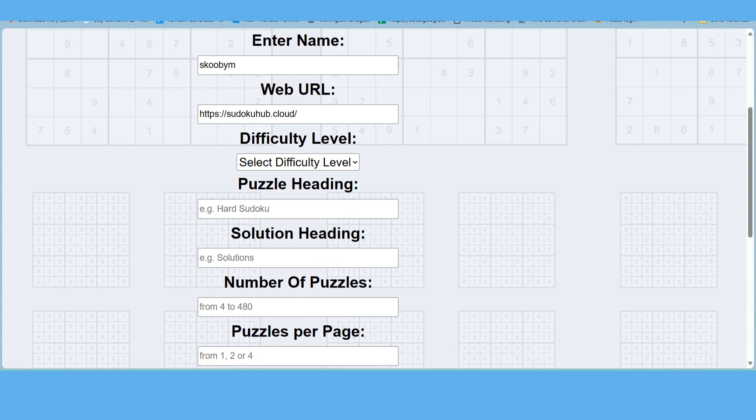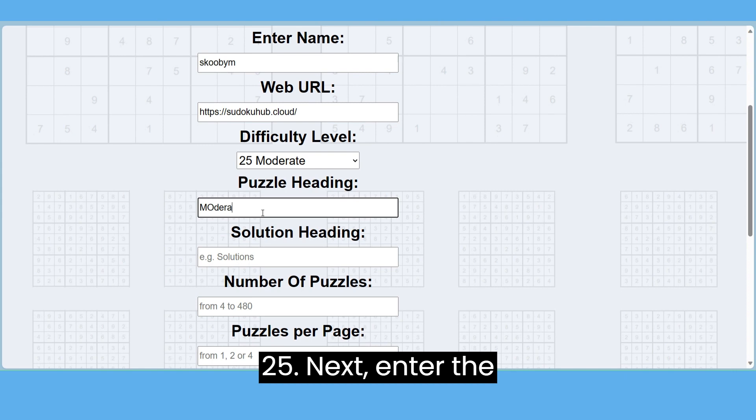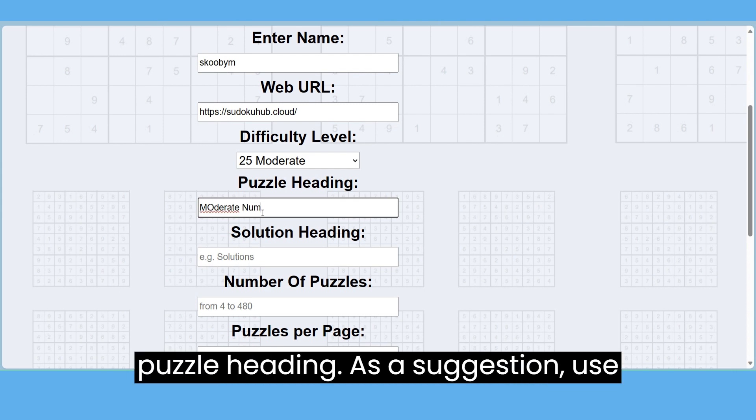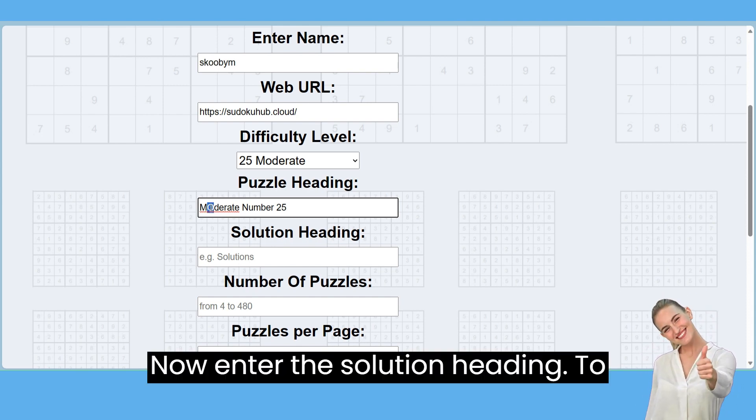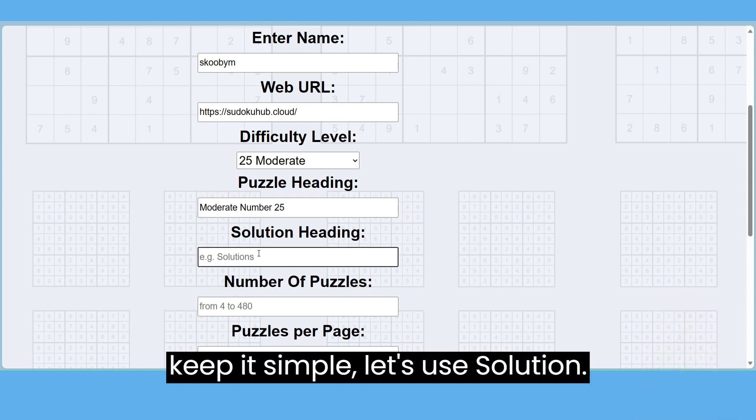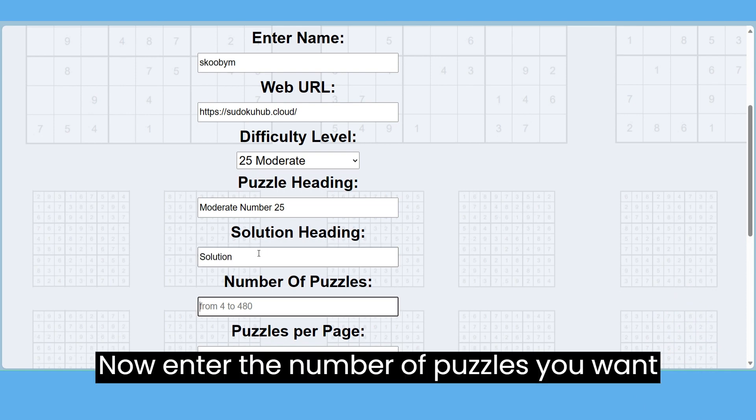For this demo we will select Moderate 25. Next, enter the puzzle heading. As a suggestion, use Moderate Number 25. Now enter the solution heading. To keep it simple, let's use Solution.